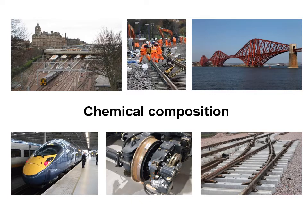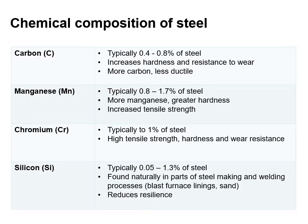Now we're going to look at the chemical composition of steel used in making rail sections. The table shown gives a typical chemical composition. The carbon content is typically between 0.4 and 0.8%. The greater the carbon content, the greater the increase in hardness and resistance to wear; however, greater carbon content reduces the ductility of the steel.